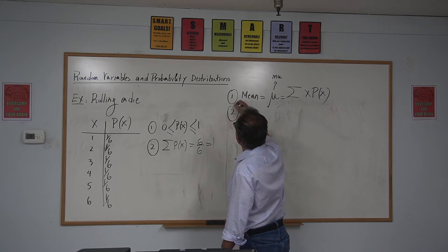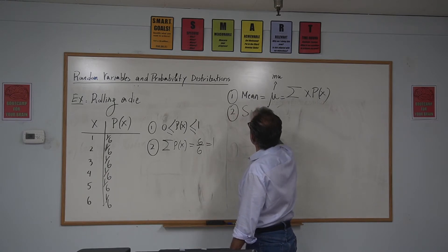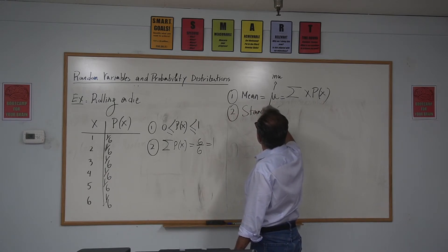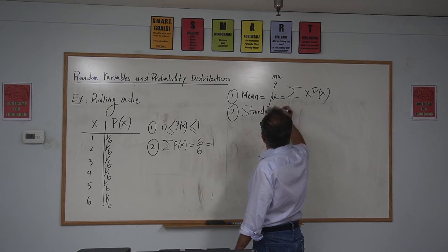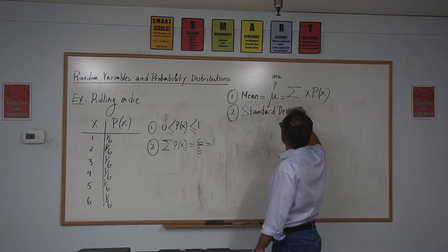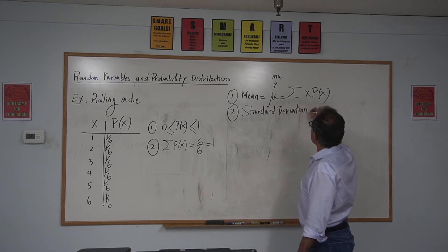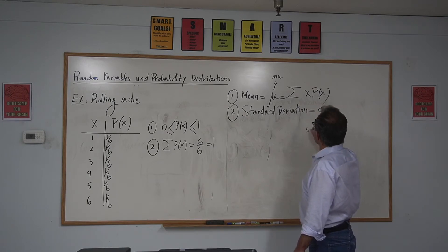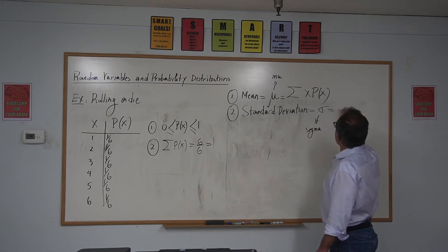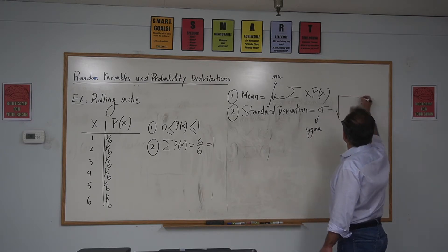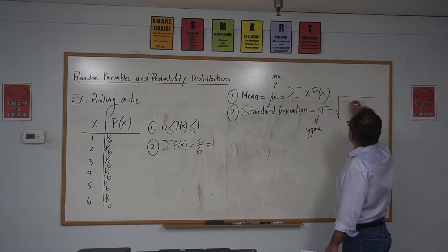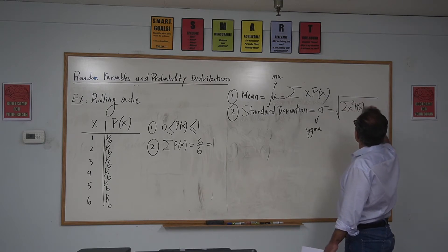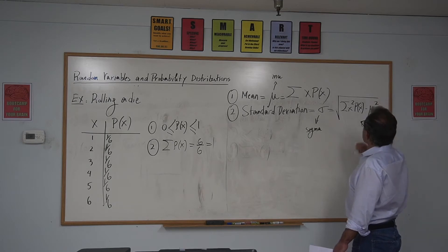And number two, we can find the standard deviation. That's sigma — again, population notation. We call that sigma. And that's the square root of the sum of X² times P(X) minus the mean squared.